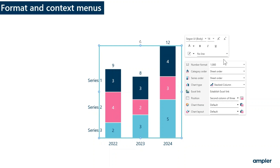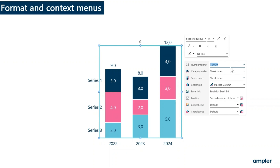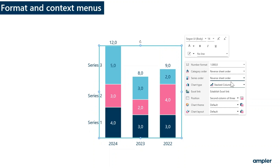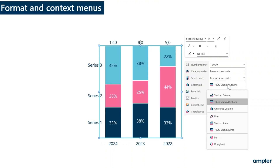Moving to the lower part of the format menu, you'll be able to set comma separator, changing the number format. You'll be able to change the category order from sheet order to reverse sheet order. You'll be able to change the series order from sheet order to reverse sheet order. You also have an option of changing from one chart type to a different one. The chart types available all share the same data structure in the data sheet.